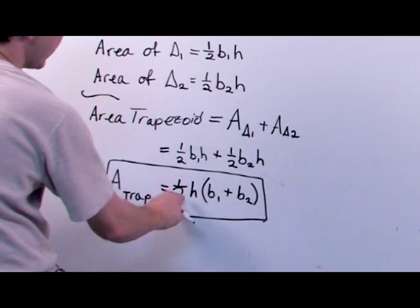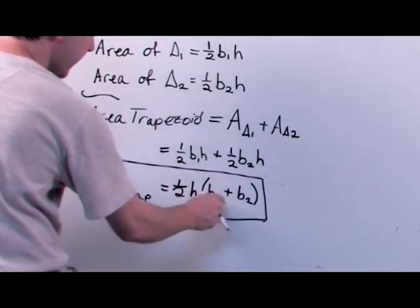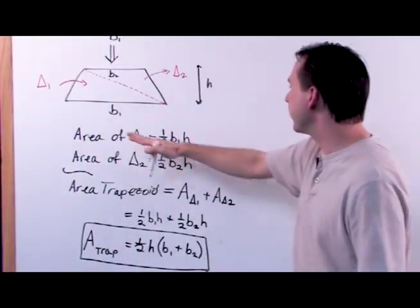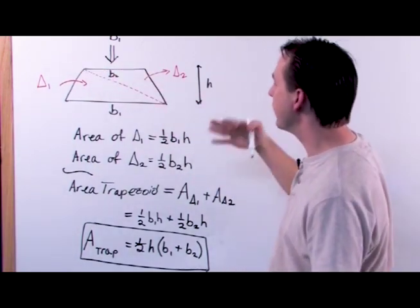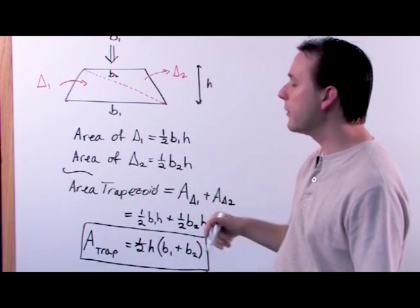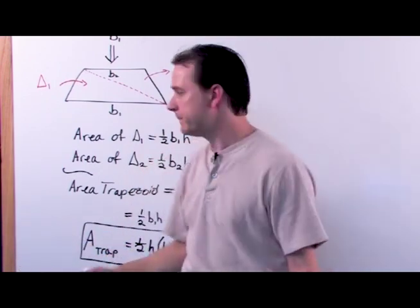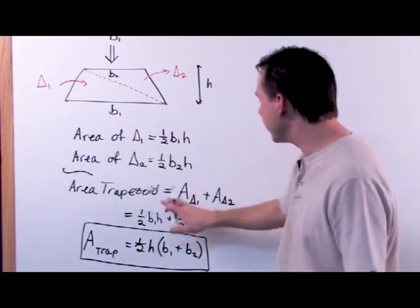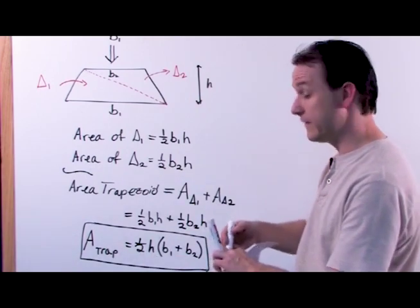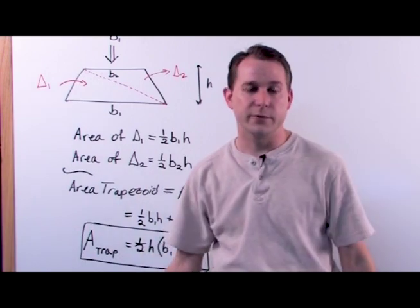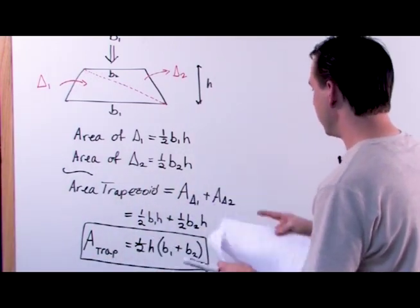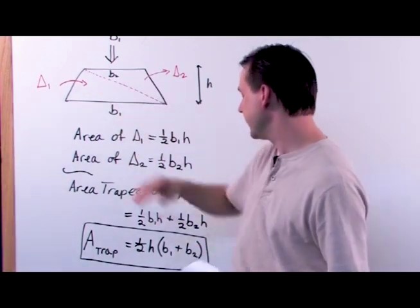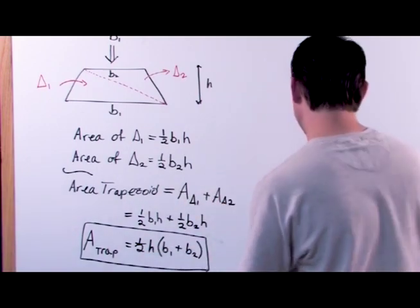You can verify this by distributing back: one half H times B1 gives the first term, and one half H times B2 gives the second — so it checks out. To summarize: we cut the trapezoid along the diagonal into two triangles, used the triangle area formula for each, added them together, and arrived at the trapezoid area formula. B1 and B2 are the two bases, and H is the height.